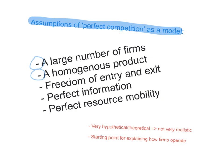There is freedom of entry and exit — any firm can enter or exit the market at any time. There is perfect information, meaning all consumers and producers are perfectly informed about costs, revenues, and price. And there is perfect resource mobility, meaning resources can be allocated and reallocated as freely as possible.